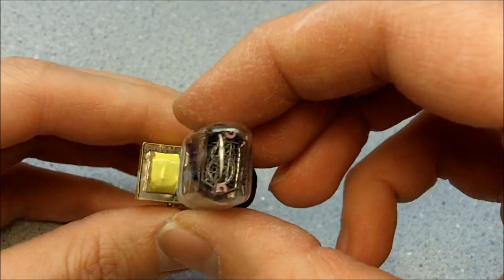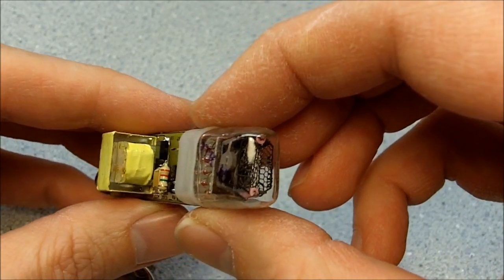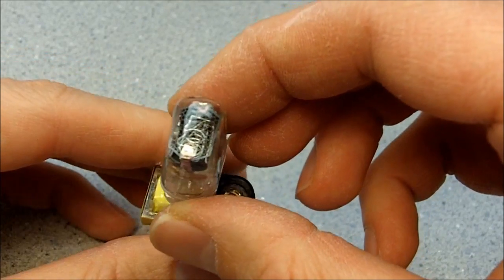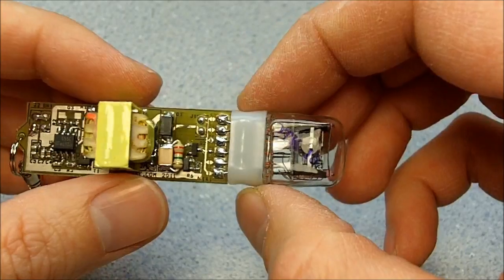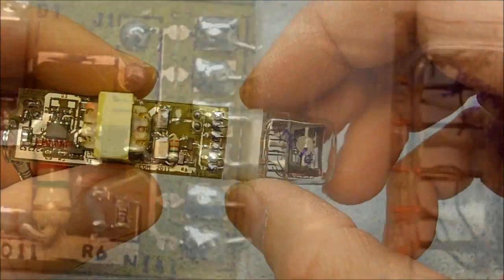So if you look at the Nixie tube here this is an IN17. It displays 0 through 9 and I thought it would be really cool to display just one digit. That's better. There's a little better close-up of the Nixie tube. You can see all the digits in there.